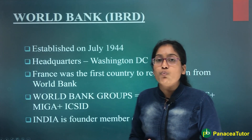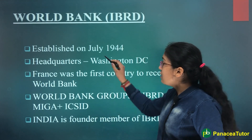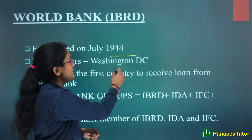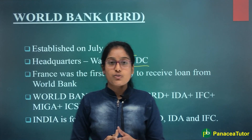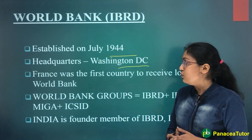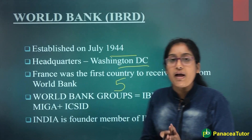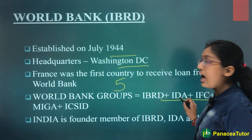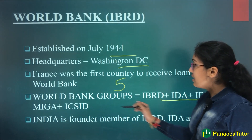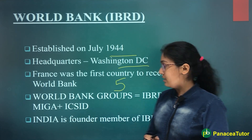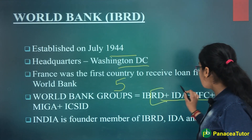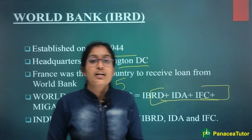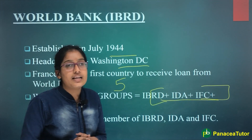Next hai World Bank. World Bank ko form kiya gaya tha July 1944 mein. Iske headquarters bhi Washington DC mein hain, and France was the first one jisne ki World Bank se sabse pehle loan liya tha. World Bank ke andar humne 5 groups padhne hain: IBRD, IDA, IFC, MIGA and ICSID. India jo hai, co-founder member hai 3 groups ka — that is IBRD, IDA and IFC.